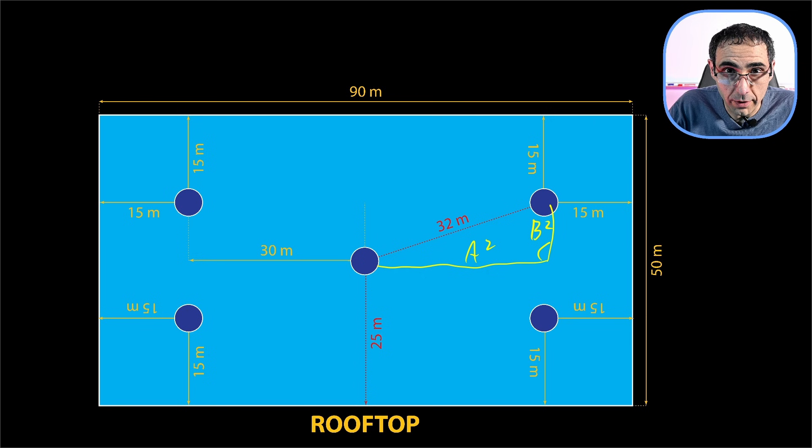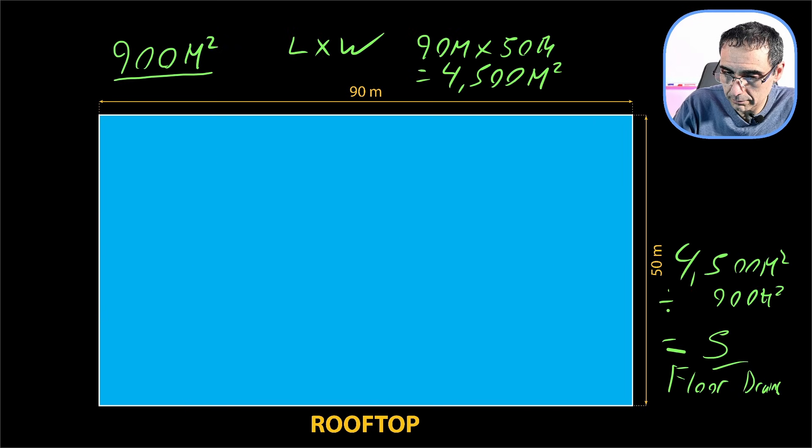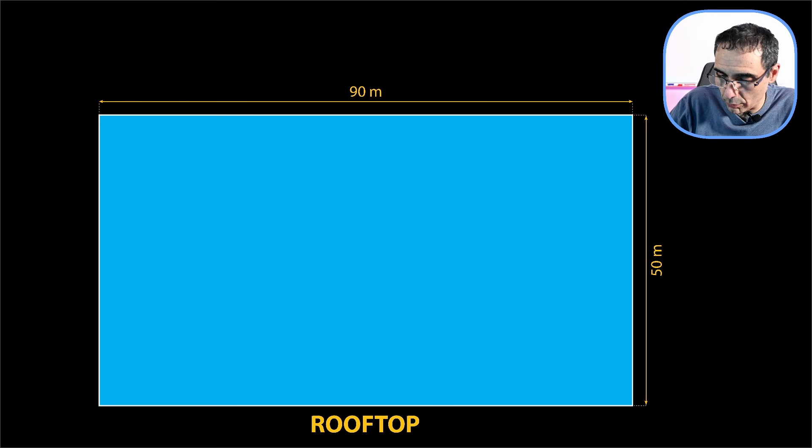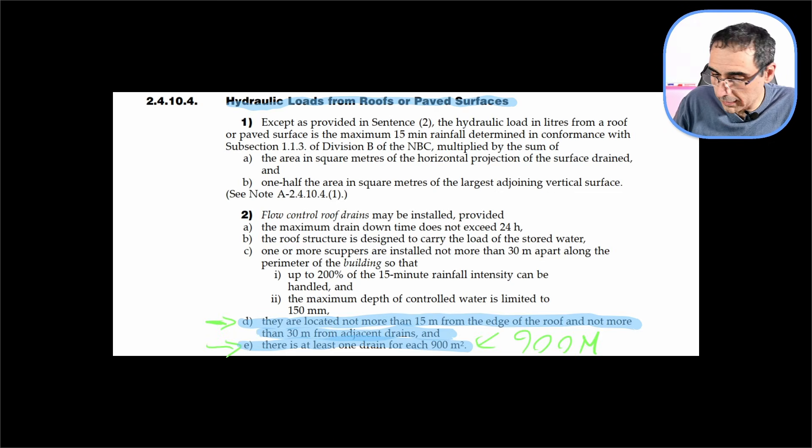So it is violating code, sentence D of code. So that goes to show that this is wrong. It is not five floor drains. There's something else we got to do. There's another step, and this step that I'm going to show you is going to apply to any roof drain scenario. So this is what we're going to do. We're going to go back to our base building. Let's start over again. We know, looking at the code, we know that we cannot exceed 30 meters for each adjacent drain. So 30 meters becomes your magic number.